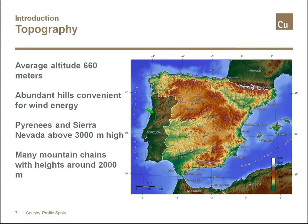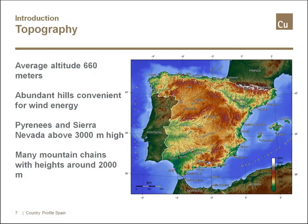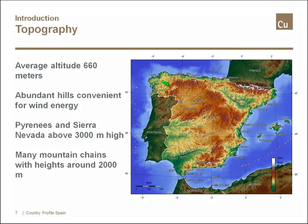On topography: the average altitude is 660 meters and there are abundant hills convenient for wind energy, as well as good resources for hydro. However, Spain is not wet enough a country to fully exploit these, so despite good orography there is a limit to hydro resources. Some new pumped hydro facilities have been built in the northern region, so there may still be some potential for pumped hydro, but pure hydro is limited by rainfall.